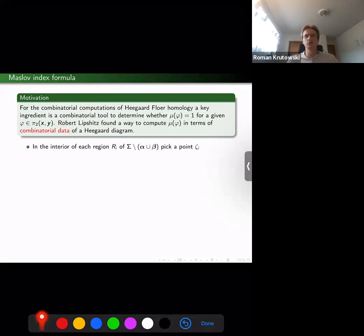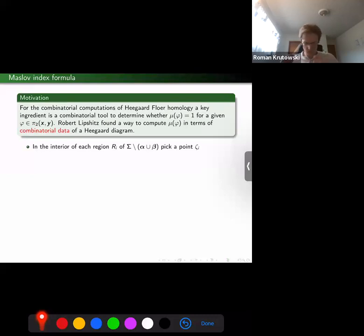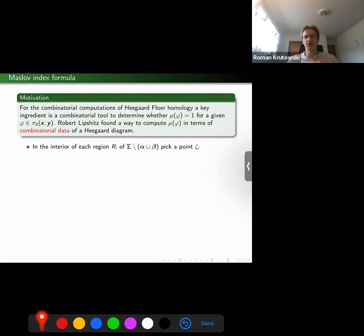It's known to be combinatorially computable in a much better way than other theories like ECH or symplectic field theory homology. Part of it—a key ingredient in this—is this Maslov index formula due to Robert Lipschitz, which allows one to determine whether a given class φ has Maslov index one. Sometimes people use Maslov index zero curves, sometimes Maslov index two occurs; I even saw a paper with Maslov index four.